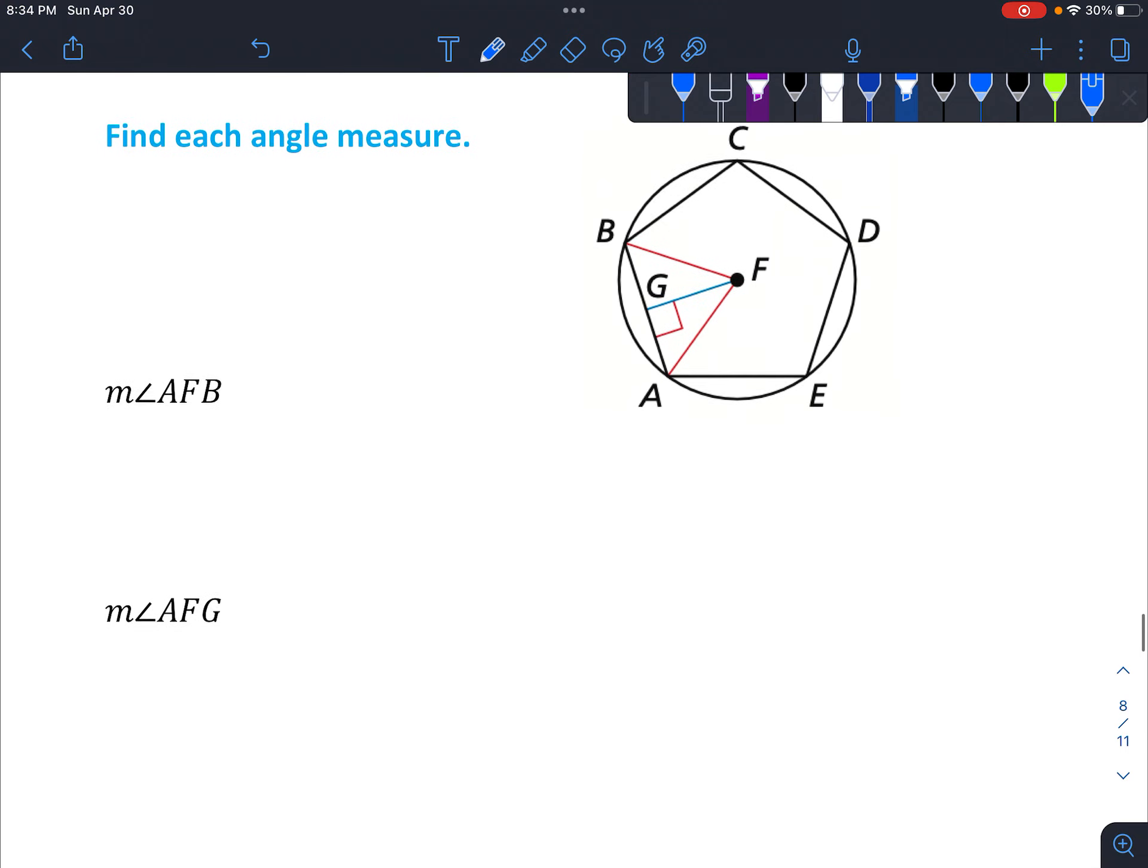So this time we're looking for each angle measure. So angle AFB, let's see. So that is one of those central angles. We're simply going to count the number of sides.